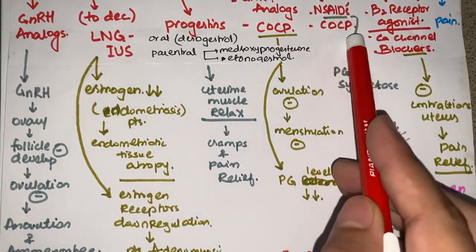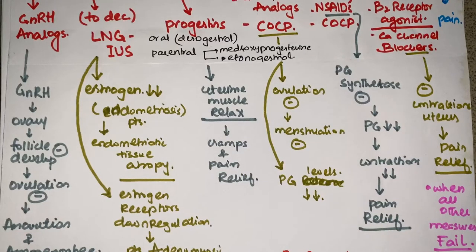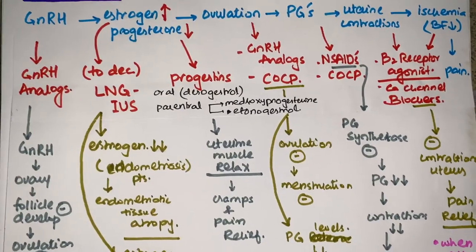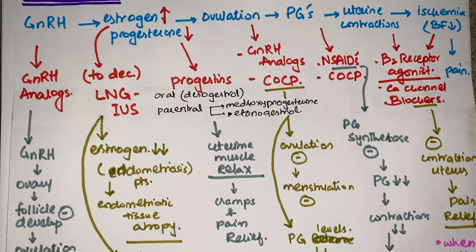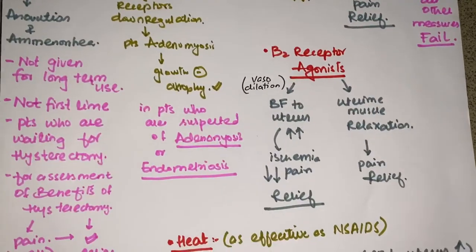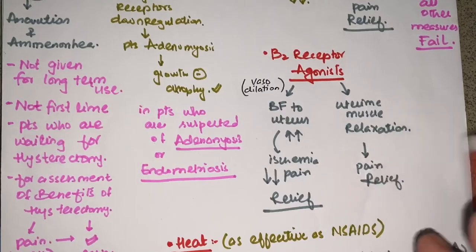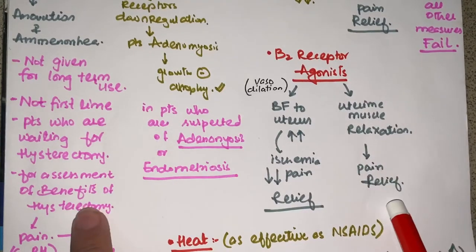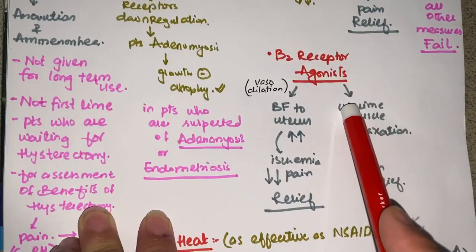Before prescribing COCPs, always assess the patient's status — whether stopping ovulation will affect her daily life or pregnancy plans. In gynaecology, choosing the most appropriate drug according to the patient's state is very important. For uterine contractions, beta-2 receptor agonists are used. They cause uterine smooth muscle relaxation and increase blood flow to the uterus, relieving ischemic pain through both mechanisms.